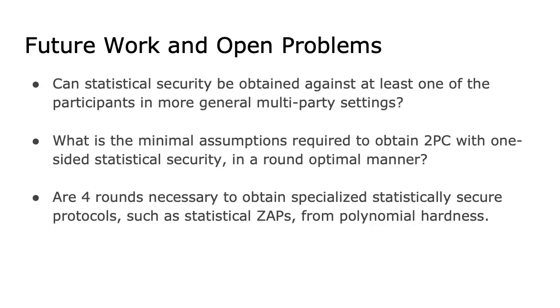Our work has obtained feasibility results for round-optimal two-party secure computation with one-sided statistical security. This is the best possible security that one could hope for in two-party protocols in the plain model. Natural next questions include: can statistical security be obtained against at least one participant in more general multi-party settings? What are the minimal assumptions required to obtain two-party computation with one-sided statistical security in a round-optimal manner? And are four rounds necessary to obtain specialized statistically secure protocols, such as statistical zaps, from polynomial hardness? This is it for my talk today, and I am looking forward to the questions.